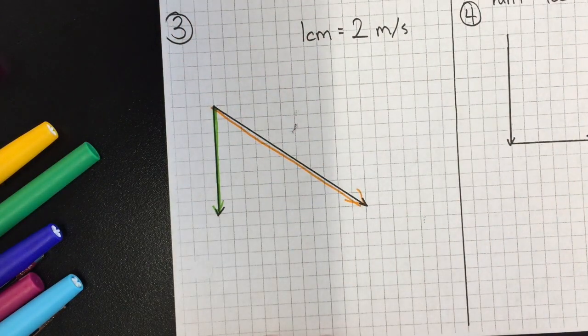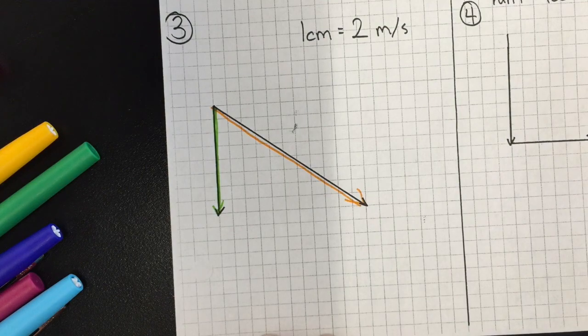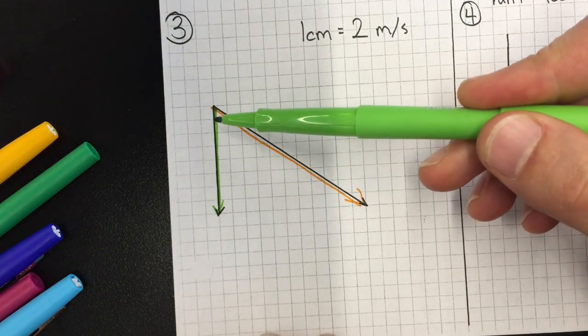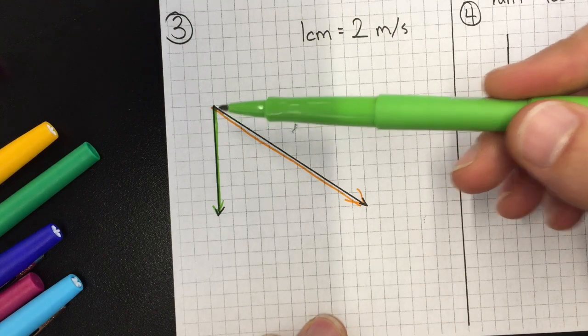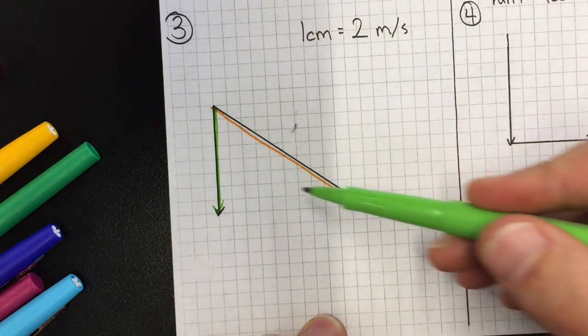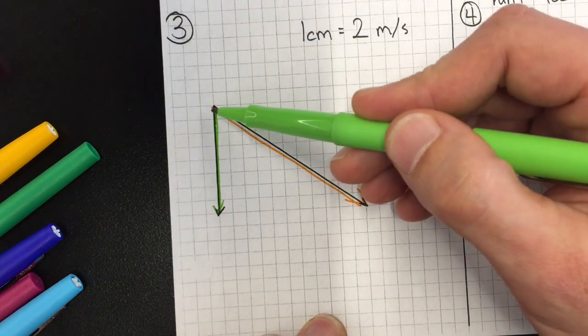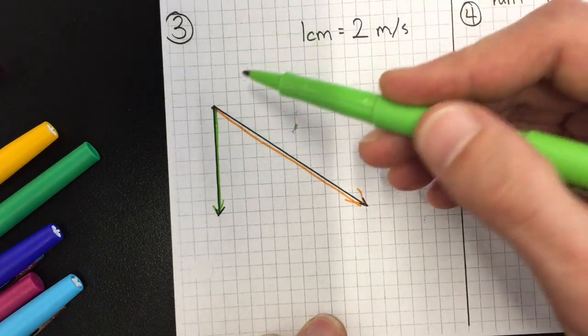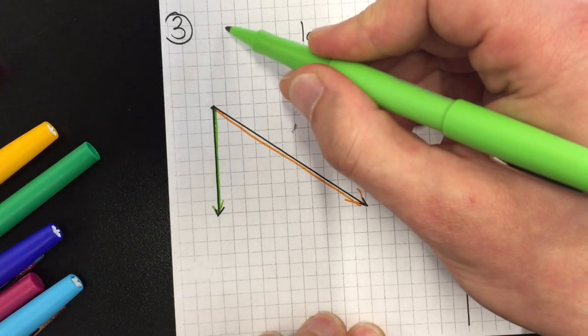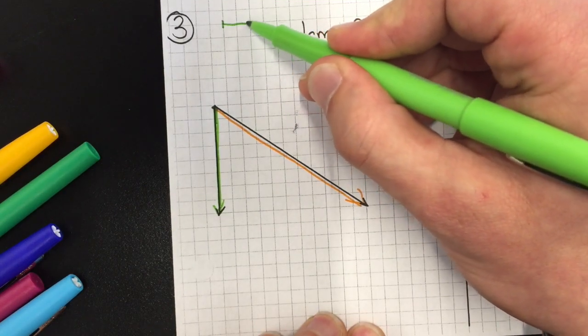So we have to add vectors tip to tail, and I think it's easier to move this vertical one. So I'm going to slide that vertical one so that its tail is lined up at the tip of the orange. And this is every two centimeters on this page, so maybe I'll just put that here. I've already checked this before - every two squares is one centimeter.